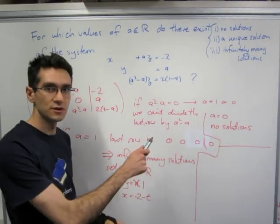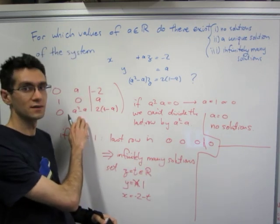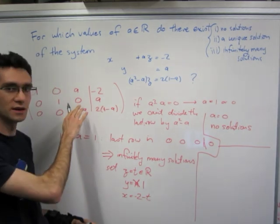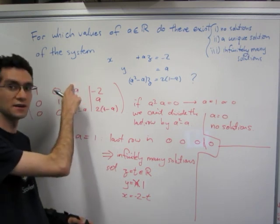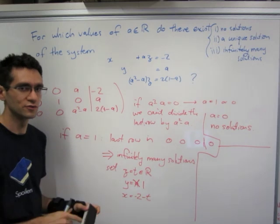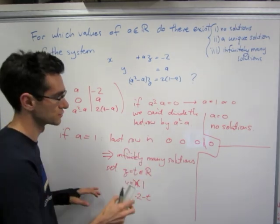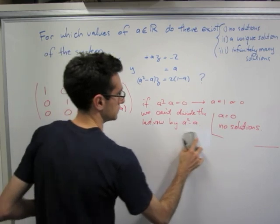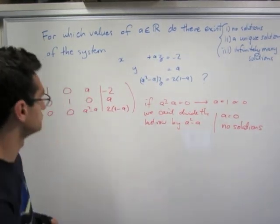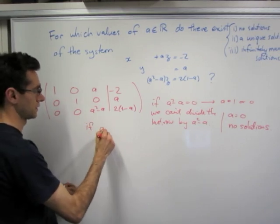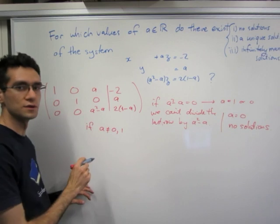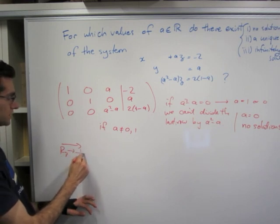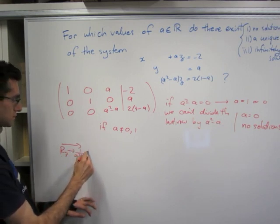So now if a is not equal to 0, not equal to 1, we can divide through by a squared minus a, because this term is not 0. And so we can put it into a row echelon form and solve from there. So I'm not going to bother cancelling out this a here. I'm just going to solve it from row echelon form, not reduced row echelon form.